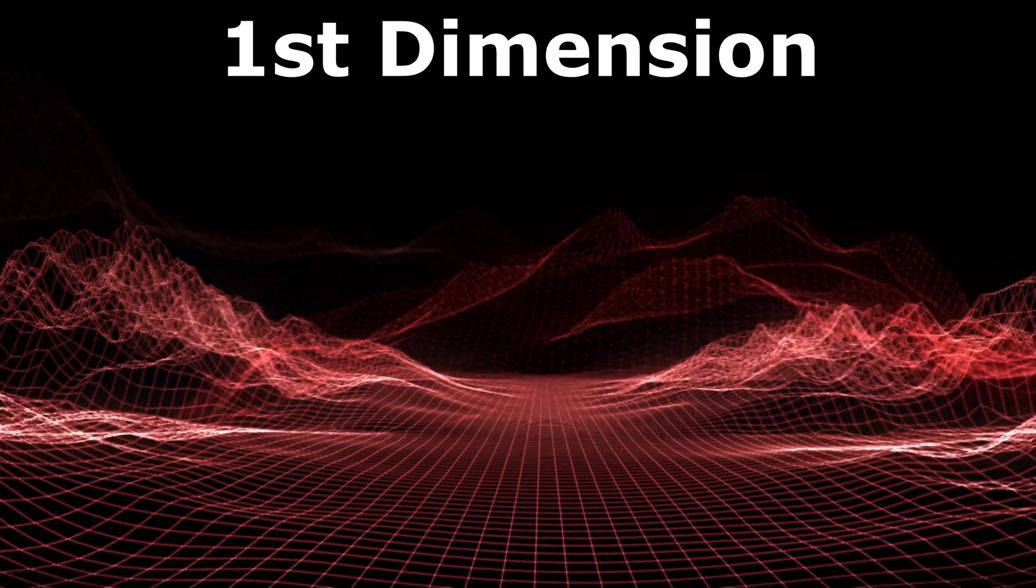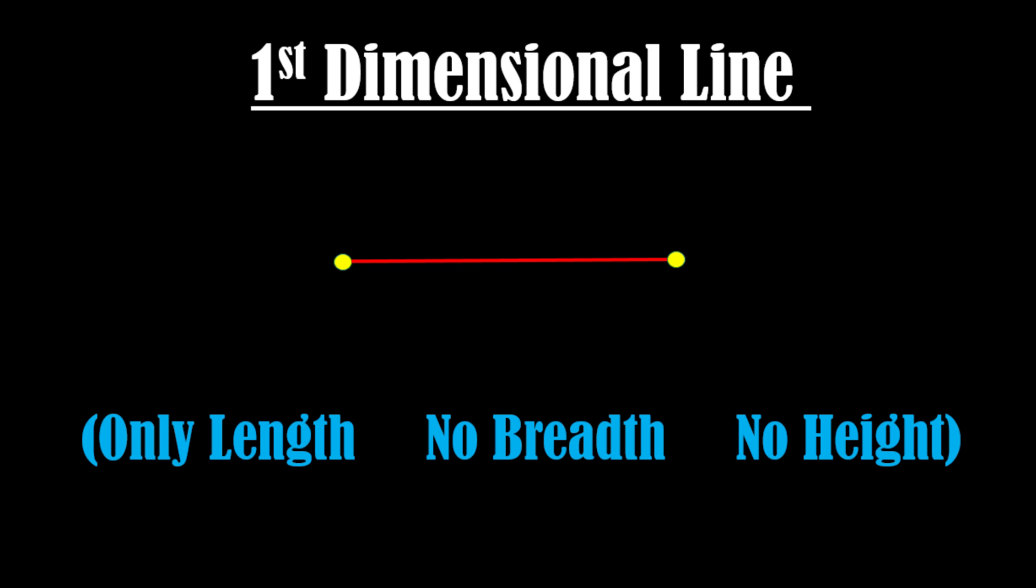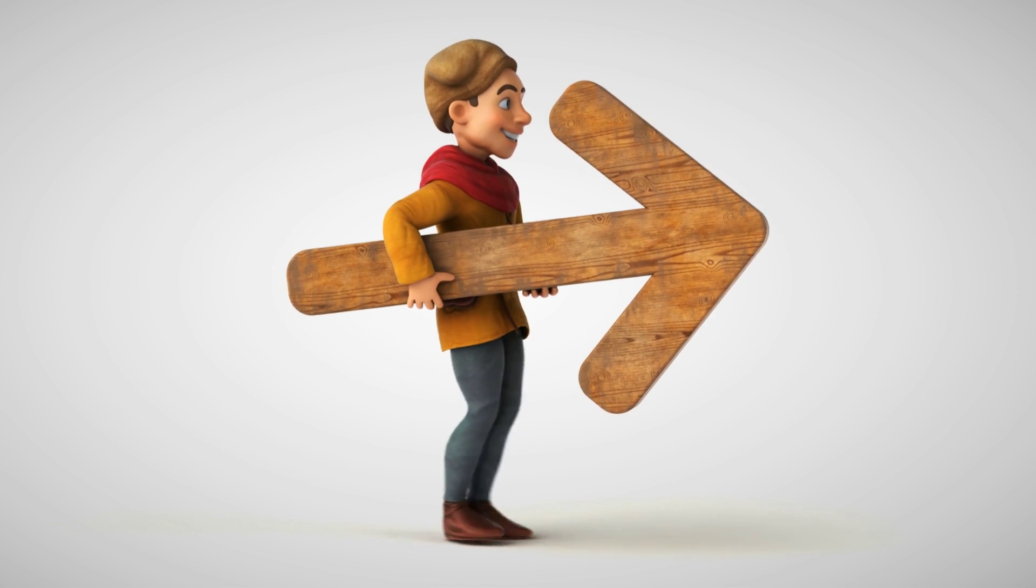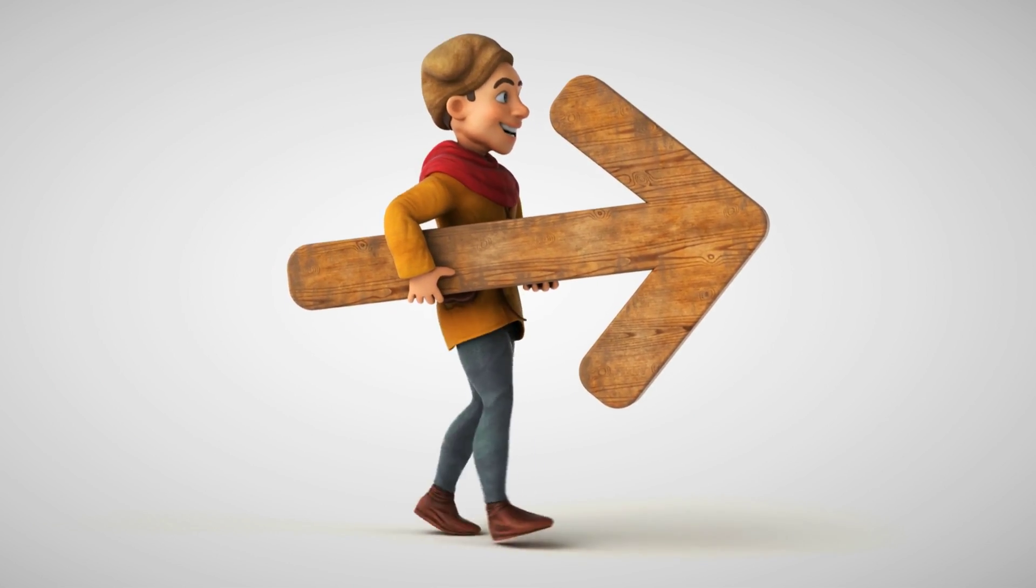A straight line is an example of the first dimension that has only one dimension: length. A one-dimensional being can move only in one direction, on a straight line.